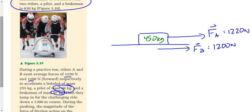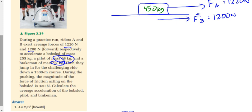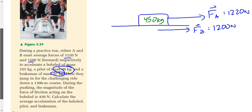What else we got here? Oh, there's a force of friction of 430. Which way is friction going to act? Yeah, if I'm pushing the sled to the right, then friction is going to act to the left. And it's going to be a much smaller force. It's only 430 newtons. We want to find the acceleration of the sled and the pilot and the brakeman.